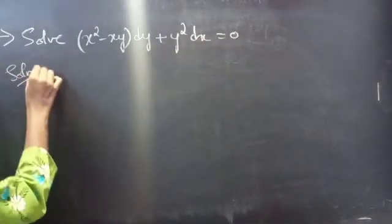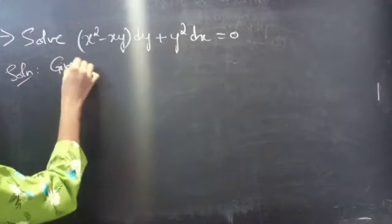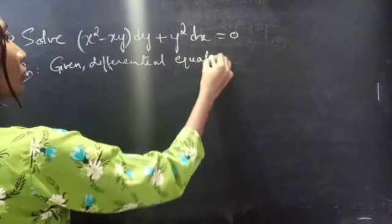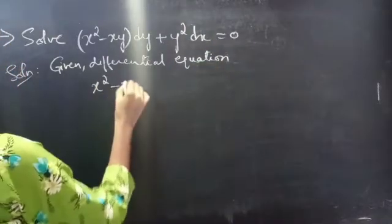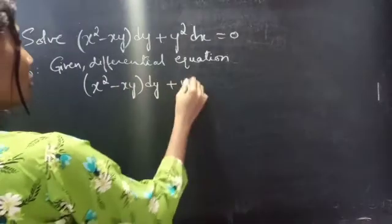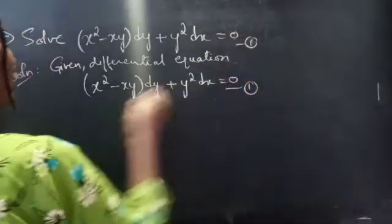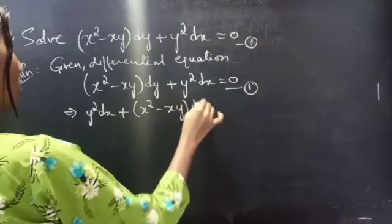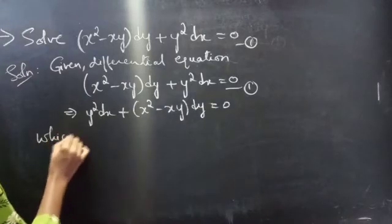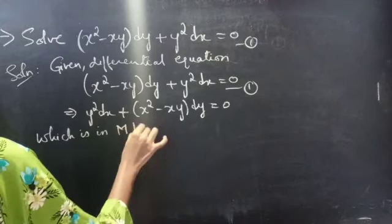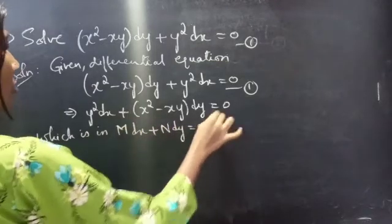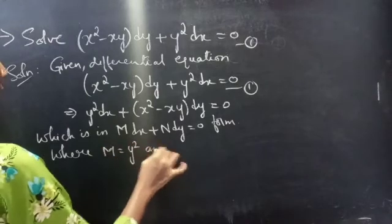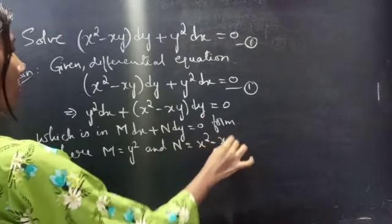Solution. Given differential equation: (x² - xy) dy + y² dx = 0. Consider it as equation 1. You can also rewrite this as y² dx + (x² - xy) dy = 0, which is in the form M dx + N dy = 0. By comparing these two, we get M = y² and N = x² - xy.